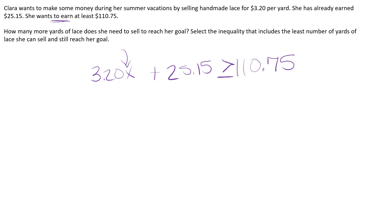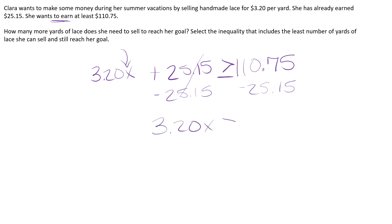So we're going to solve this. I'm going to subtract $25.15 from both sides because I have to undo that addition. That gives us $3.20x is greater than or equal to $85.60.